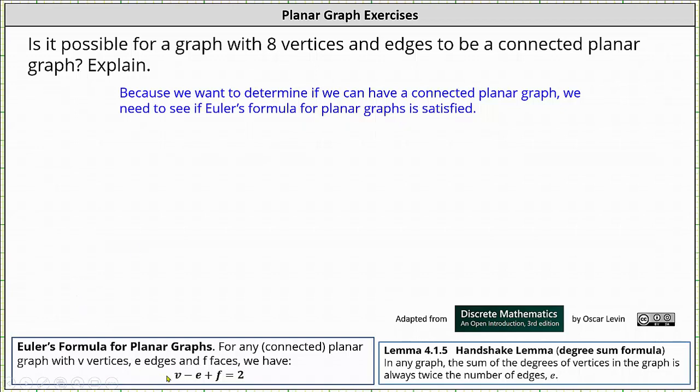Euler's formula is v minus e plus f equals two, where v is the number of vertices, e is the number of edges, and f is the number of faces. And for every connected planar graph, this equation is true.